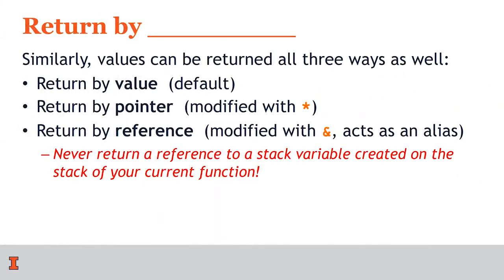We can also return by all three types: by value (making a copy), by pointer (returning a memory address), or by reference (returning an alias). However, you should never return a reference to a variable created on the stack — it will cause problems. The compiler will hopefully give you a warning, but avoid returning by reference for internal stack variables. We'll see more about this once we get into data structures.